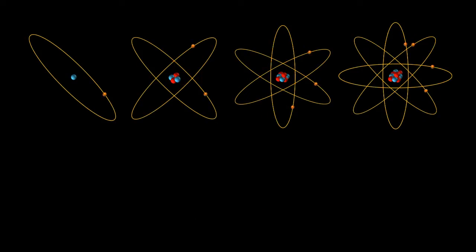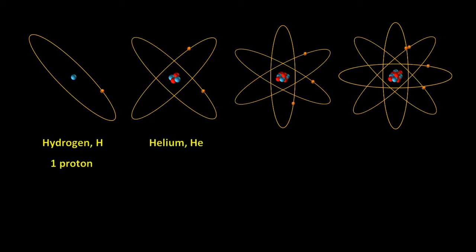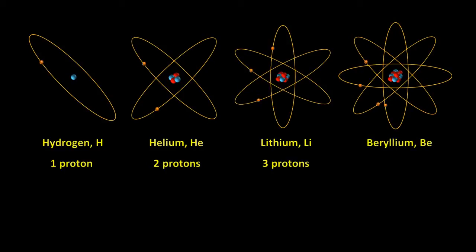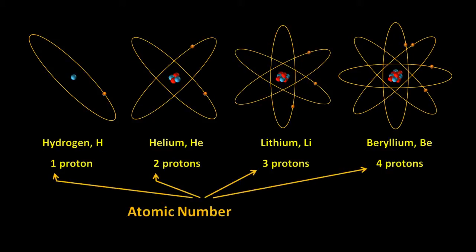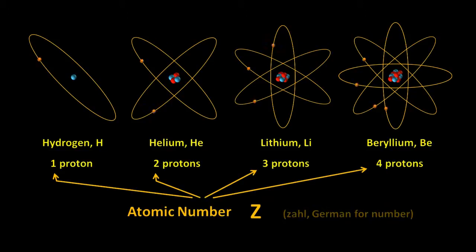Atoms are defined by how many protons they have in their nucleus. By definition, all hydrogen atoms have one proton in their nucleus, all helium atoms have two, all lithium atoms have three, all beryllium atoms four, and so on. The number of protons in the nucleus is referred to as the atomic number and is given the symbol Z. This letter stands for Zaal, which is the German word for number.